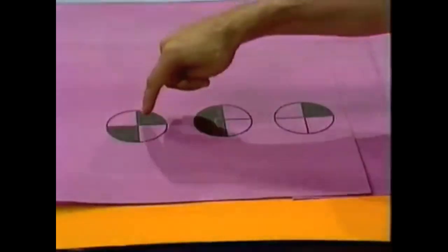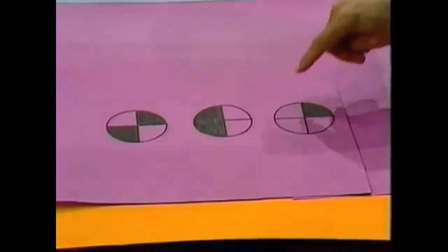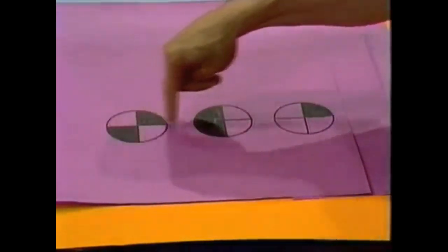Here's a problem with a series that concerns not numbers nor letters of the alphabet, but little pictures. There's picture number one, picture number two, picture number three. Each of them consists of a circle divided up into quarters or quadrants.